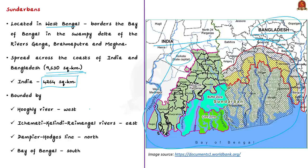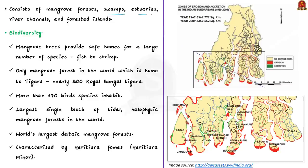Sundarbans is bounded by the river Hooghli on the west, and on the east by the Ichamati, Kalindi, and Raimangal rivers. On the north it is bounded by the Dampier-Hodges line, and to its south lies the Bay of Bengal. Sundarbans consists of mangrove forests, swamps, estuaries, river canals and forested islands. That is why Sundarbans is very important from an ecological perspective. There are more than 100 islands of various shapes and sizes, of which around 50% are inhabited.